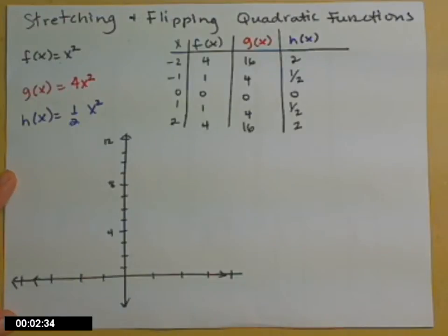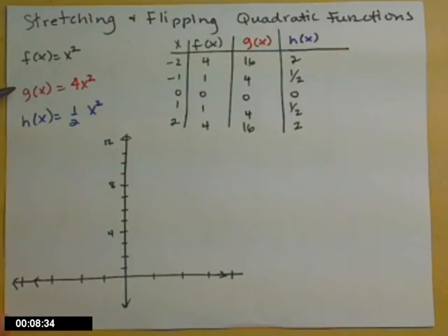So now let's look at how we can stretch and flip our quadratic functions. I have three functions written here: f(x) = x², g(x) = 4x², and h(x) = ½x².